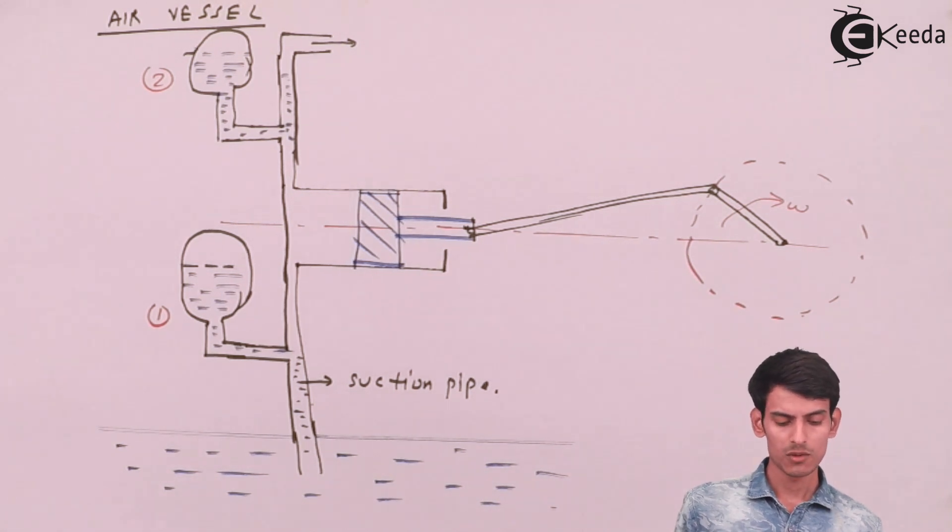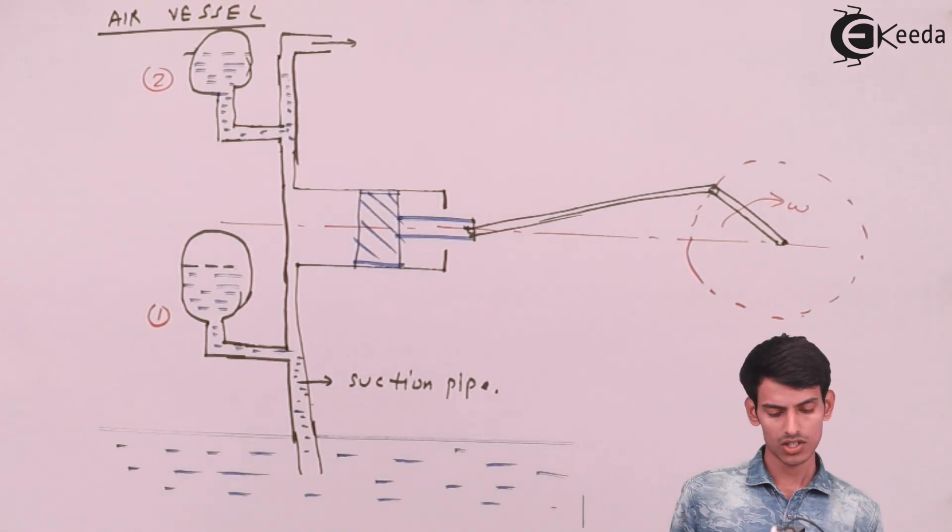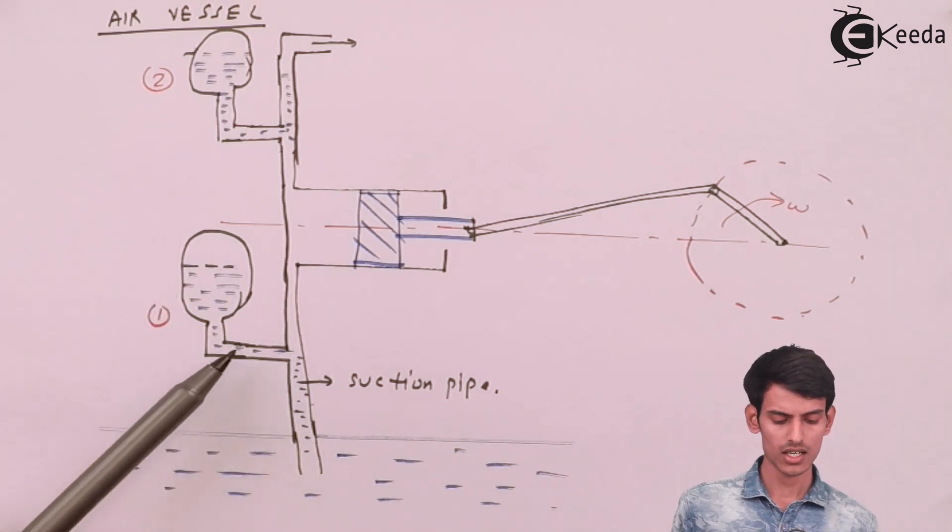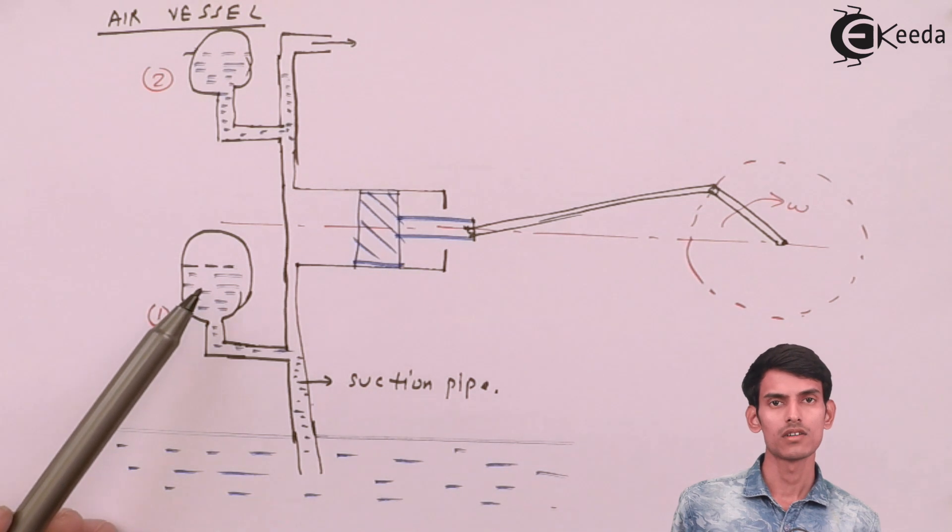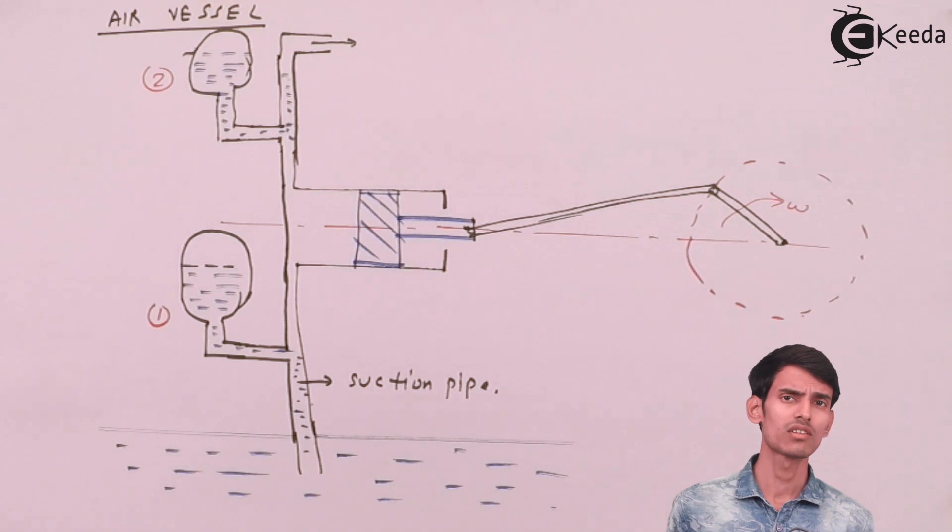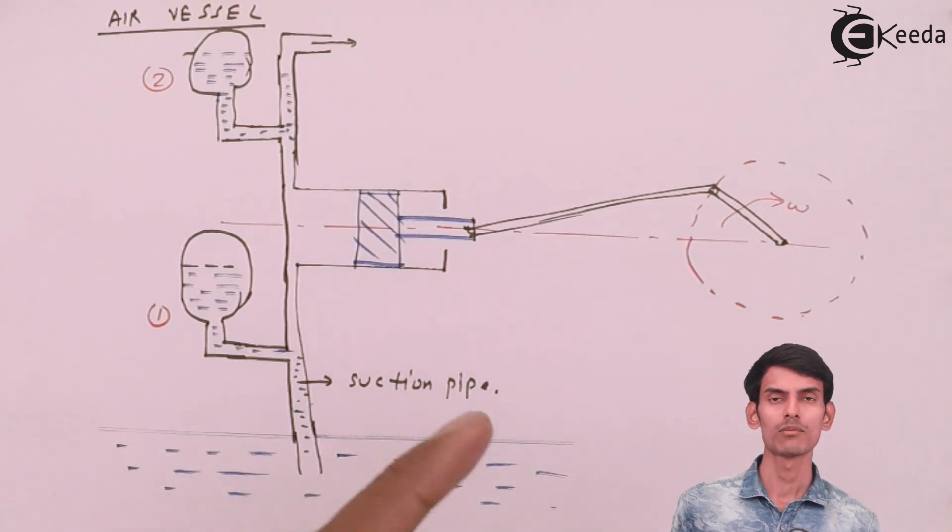So what happens is, suppose it is filled with air, the water is being sucked into the pump from the suction pipe. Now since there is a connection with this container, the water first enters into this air vessel, and then after the air vessel is filled to a certain level, the water starts flowing into the pump.